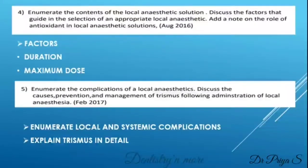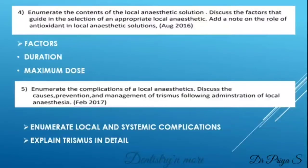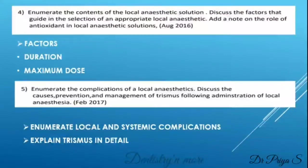The next question: enumerate the complications of local anesthetics. They haven't specified whether it is local or systemic, so list down all the complications — both local and systemic. Then discuss the causes, prevention, and management of trismus in detail. After you enumerate all the complications, expand your answer only for trismus, covering cause, prevention, and management as asked in the question.